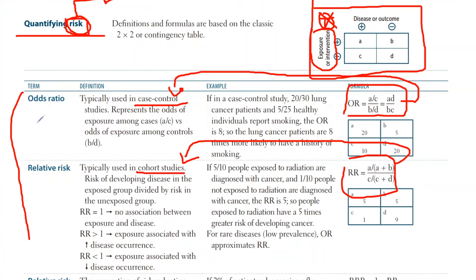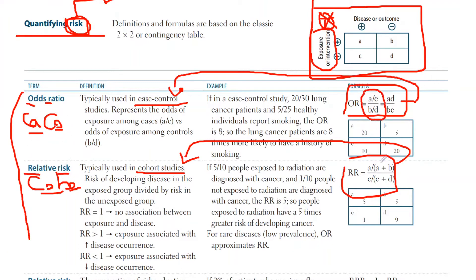Here's a quick mnemonic: odds ratio is 'OR' — two different letters — and case-control is 'CC' — also two different letters. For relative risk, remember 'cohort' has double O, and relative risk is 'RR' — double letters. To remember which uses ratios vs. proportions: odds ratio uses ratios, so the other one uses proportions. That's an easy way to keep them straight.